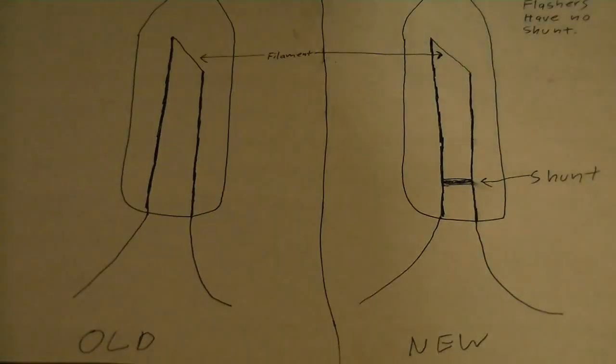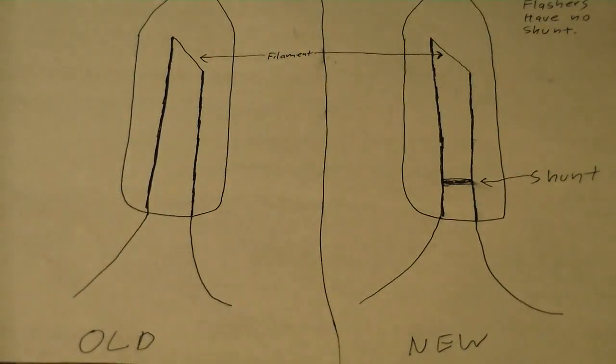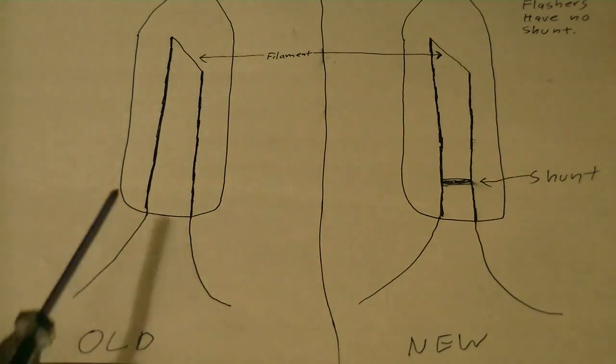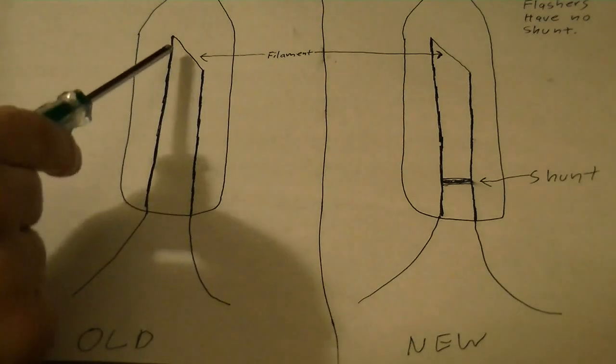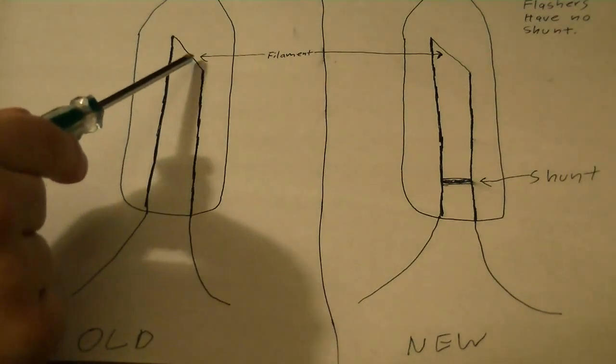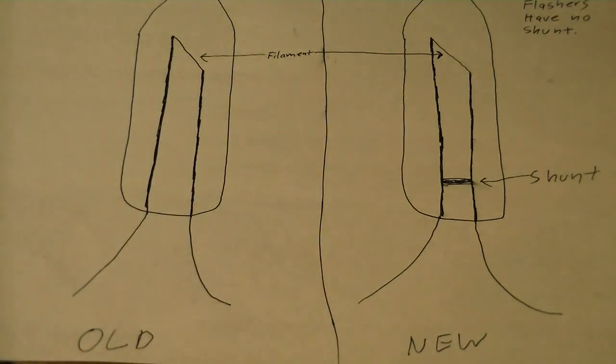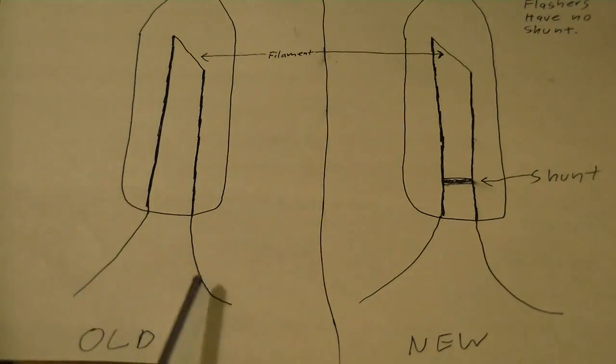If you notice from these papers I wrote OLD on there, this is the way the lights used to be. A few years back they changed the design of the Christmas light bulb. This is the old bulb, just a simple incandescent style bulb. This represents the wire coming into it, and this is the filament here. This is what glows white hot to produce the light you see, and this is your wires coming out of the bottom.